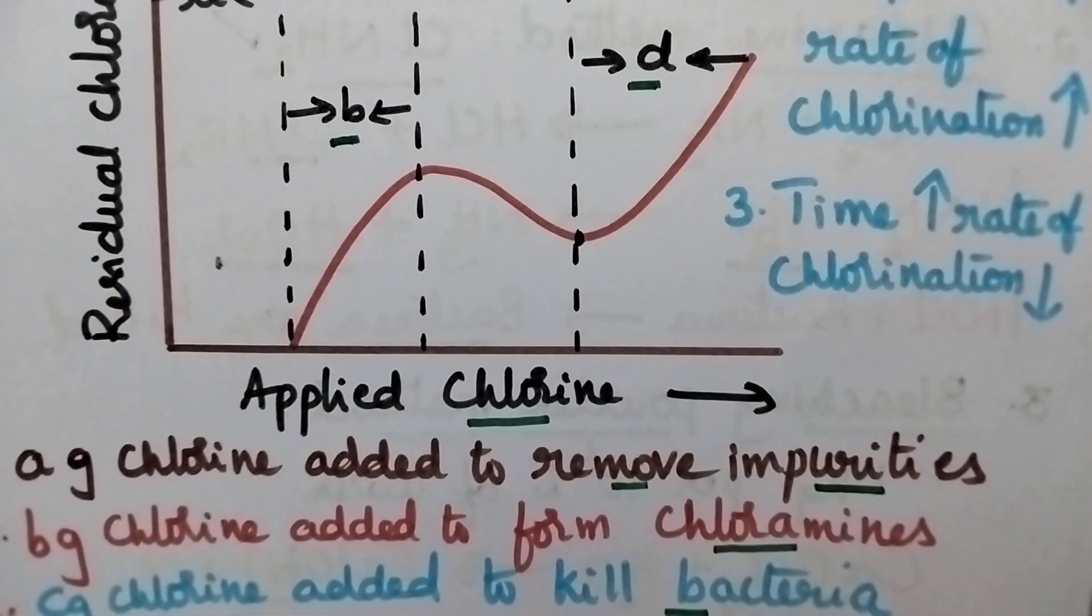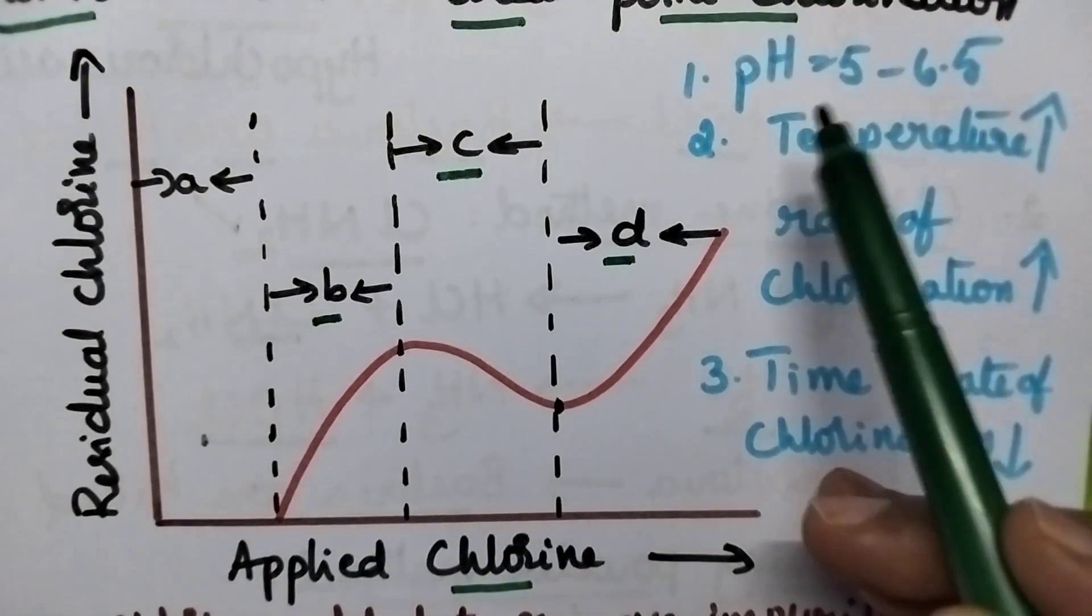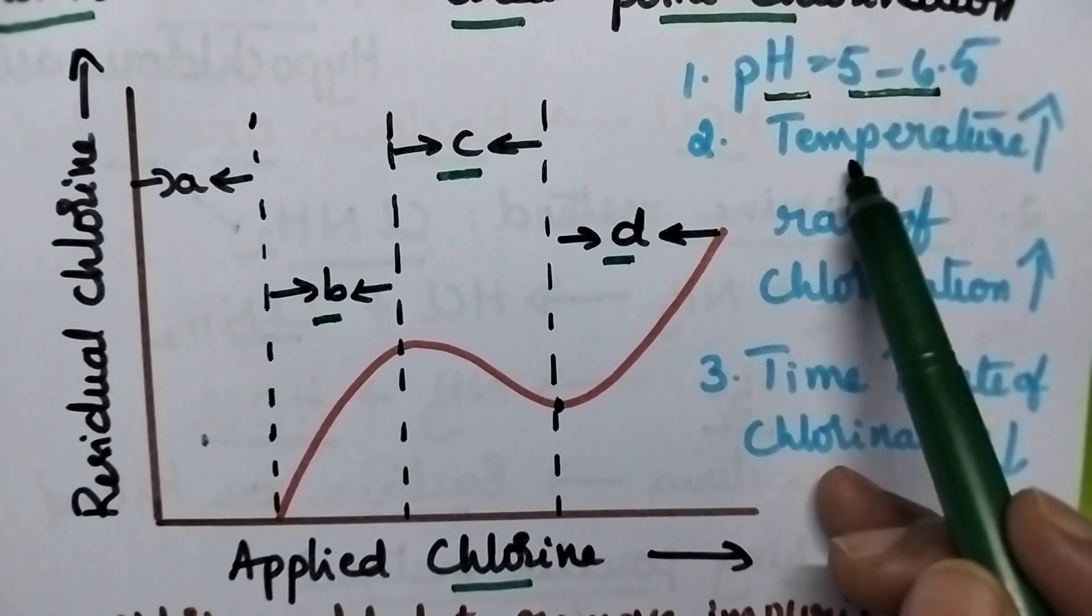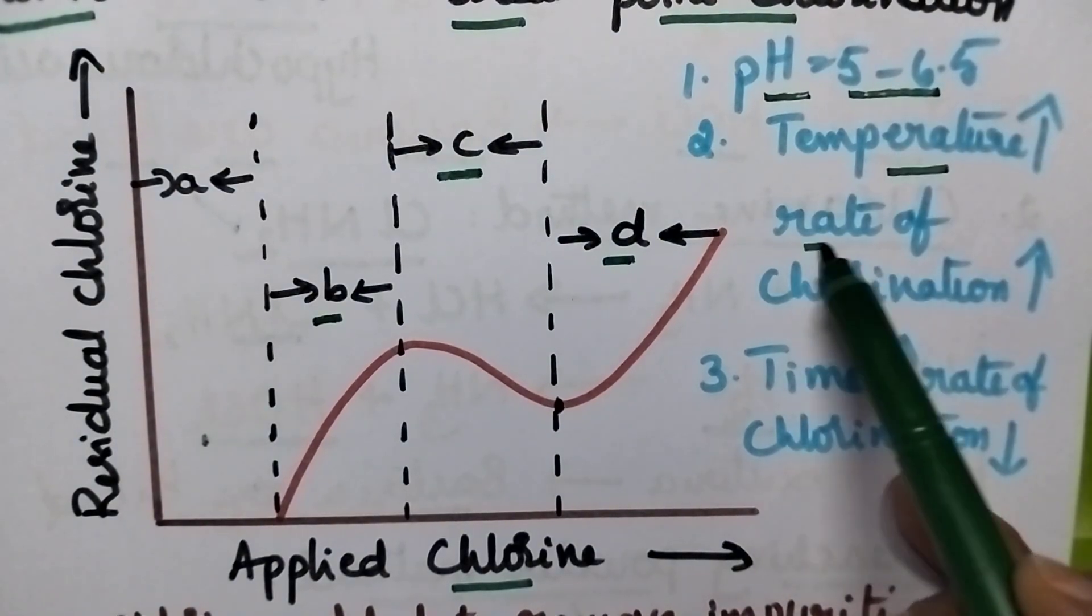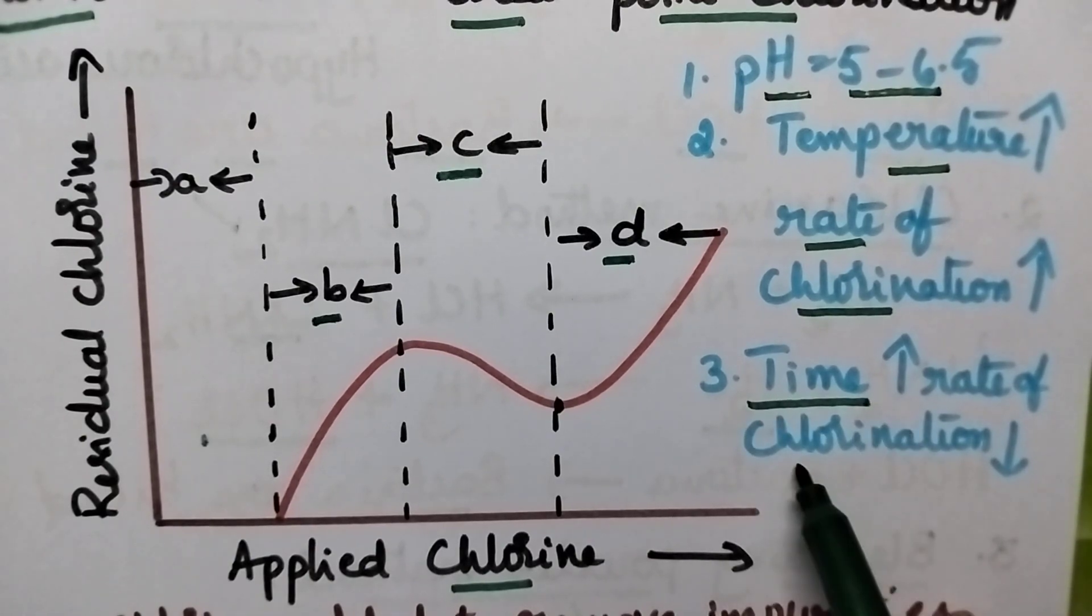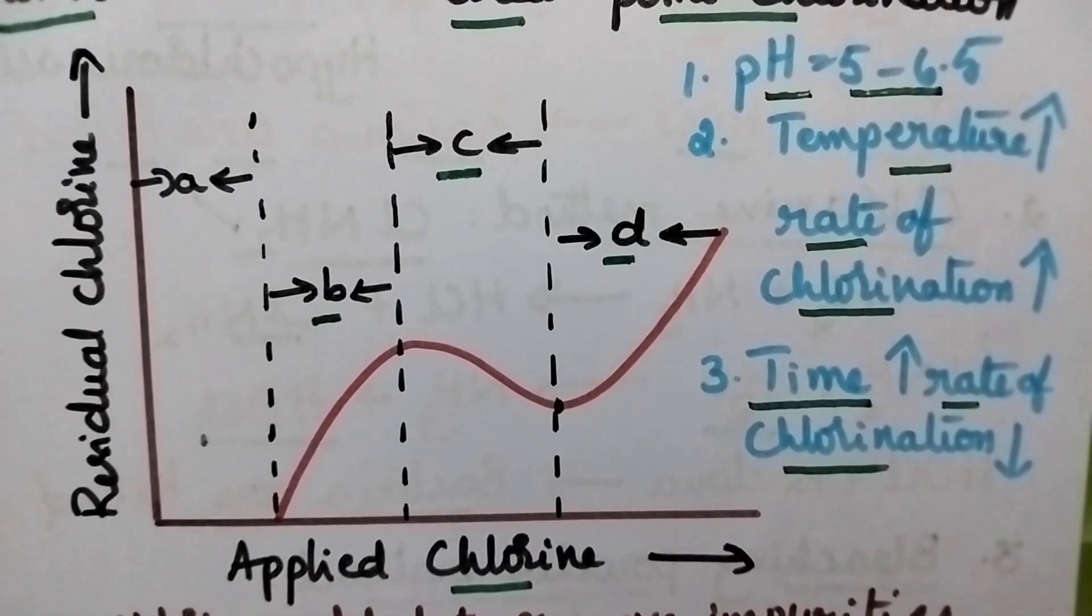This chlorination process is effective when the pH is maintained from 5 to 6.5. As the temperature increases, the rate of chlorination also increases. But remember that as the time increases, the rate of chlorination decreases.